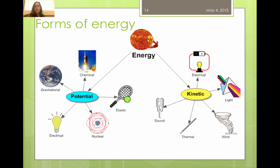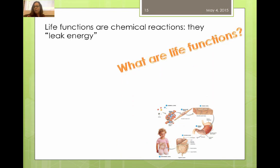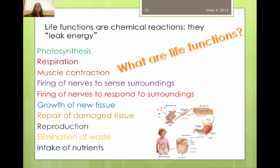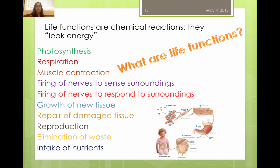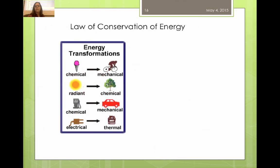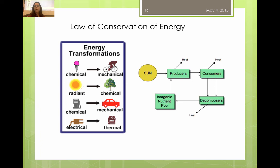Energy is never created nor destroyed. We're mostly concerned in biology about chemical energy and light energy, although we can also talk about kinetic energy and potential energy that are important to life processes. All of these processes are inefficient in that they lose energy in their interactions, and that energy comes off as heat. So we convert energy from one form to another in life, and an important thing to think about is that every step of the way — from producers to consumers, consumers to decomposers — we lose heat.